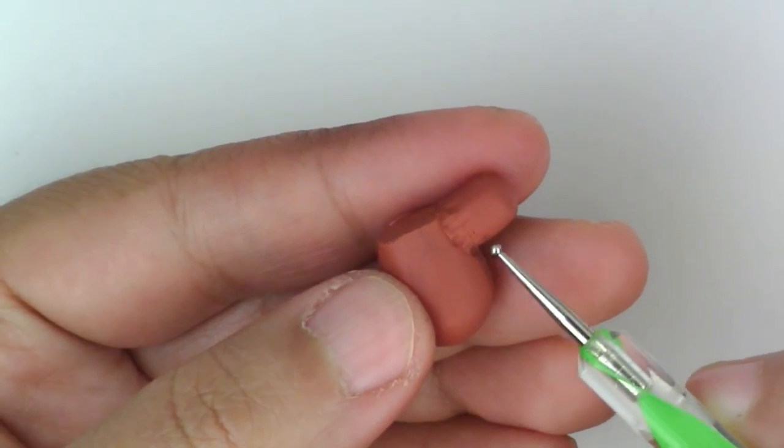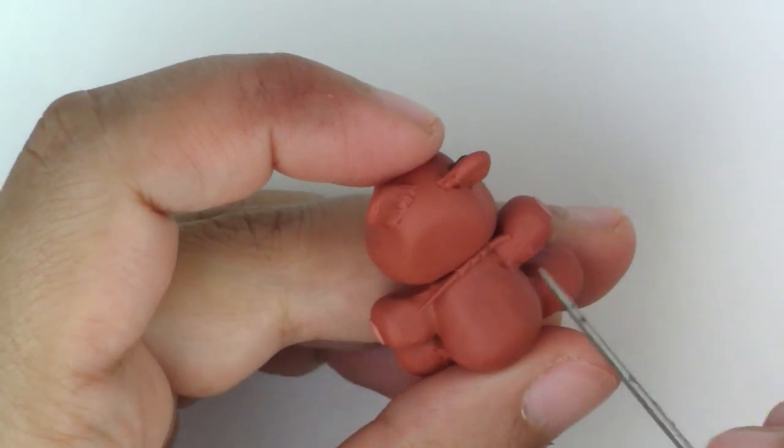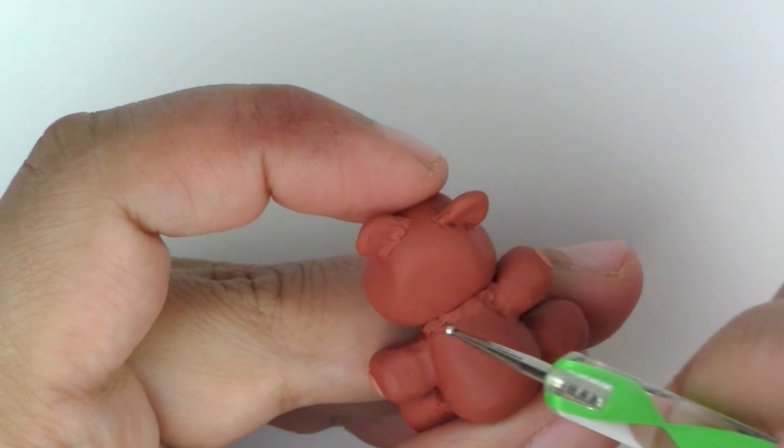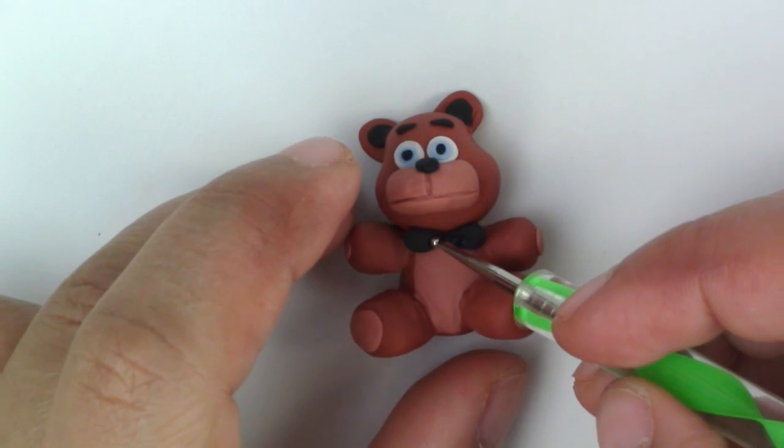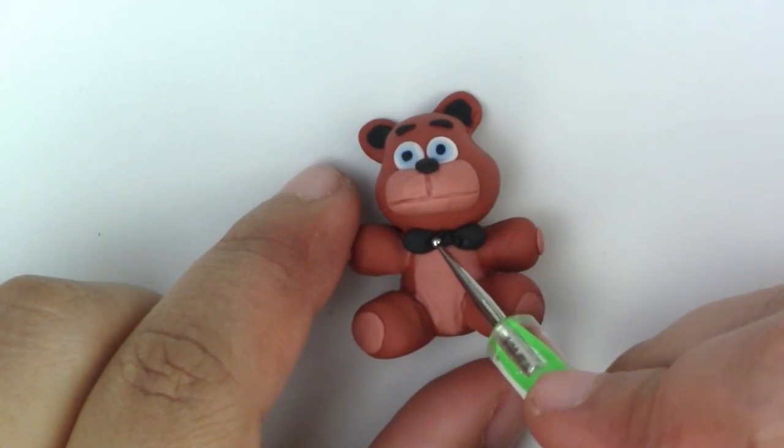For the body, you're going to do exactly the same thing we did for Foxy, then add the head as we did before. Make some black teardrop shapes and place them for the bow tie. Then add a circle in the middle.